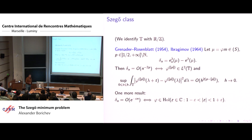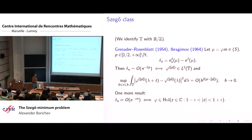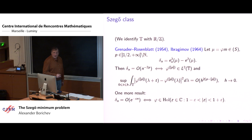This is what is happening for polynomial decay of the parameters delta_n. If you are interested in a more rapid rate of approximation — like exponential rate of approximation — the answer is that the corresponding density phi should be much smoother. In fact, it should have a holomorphic extension into an annulus containing the unit circle.